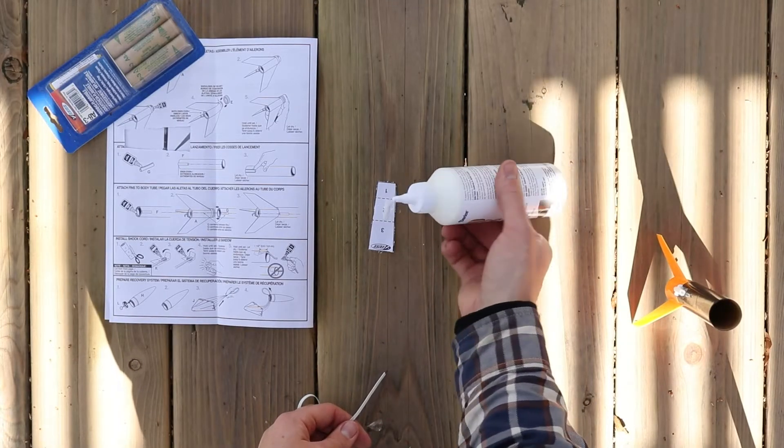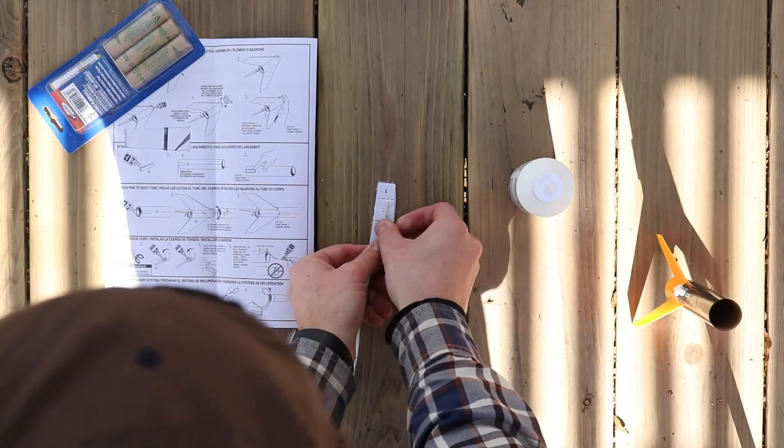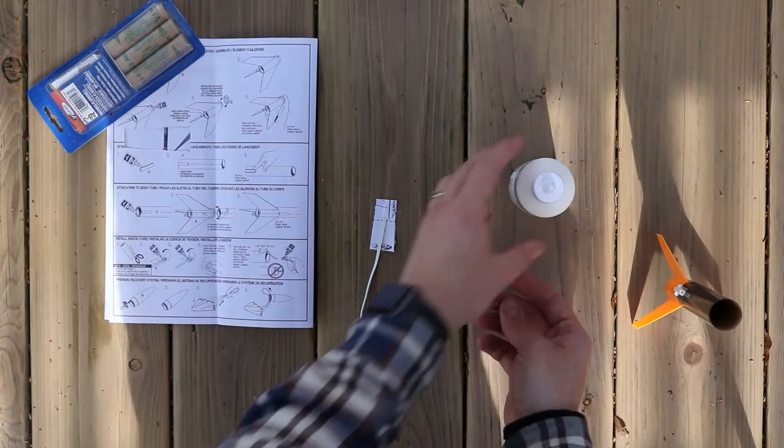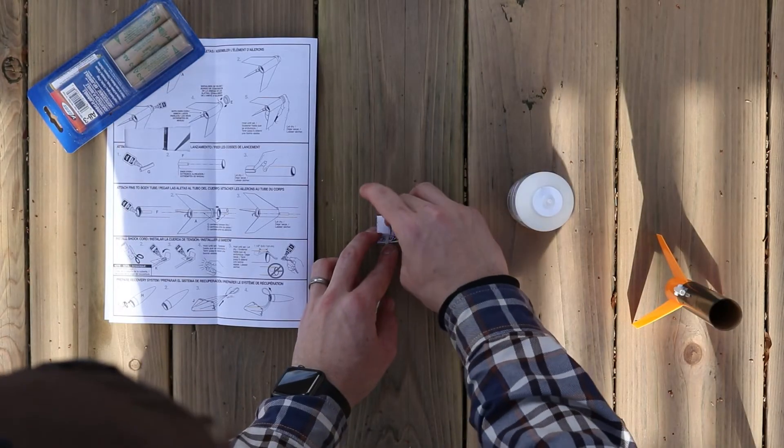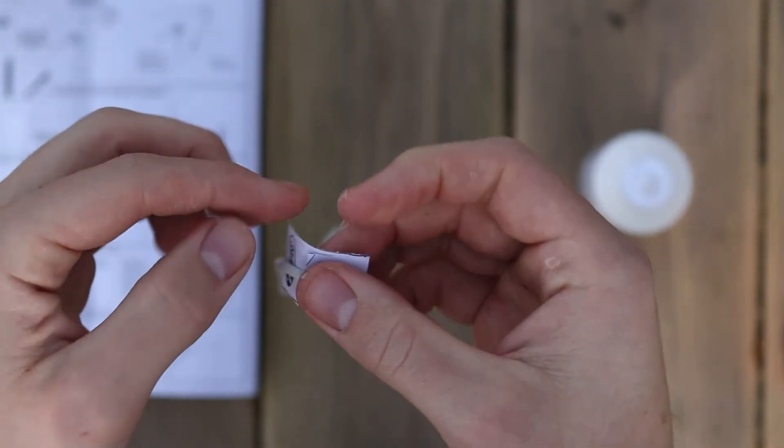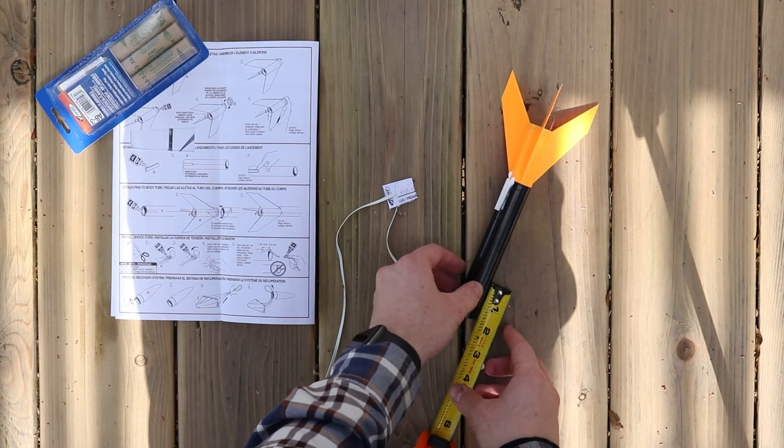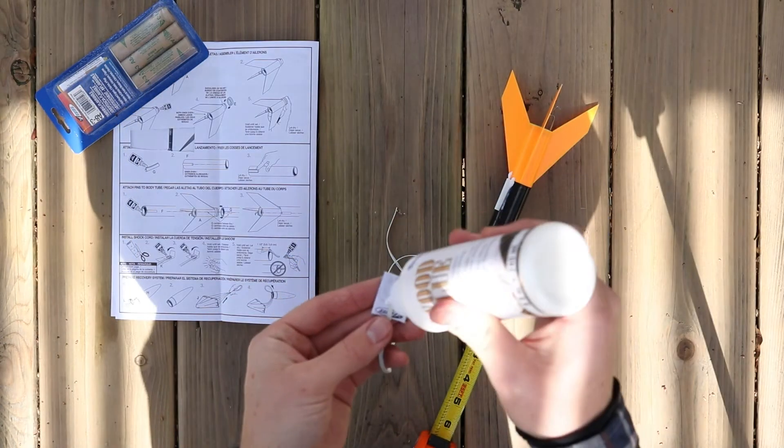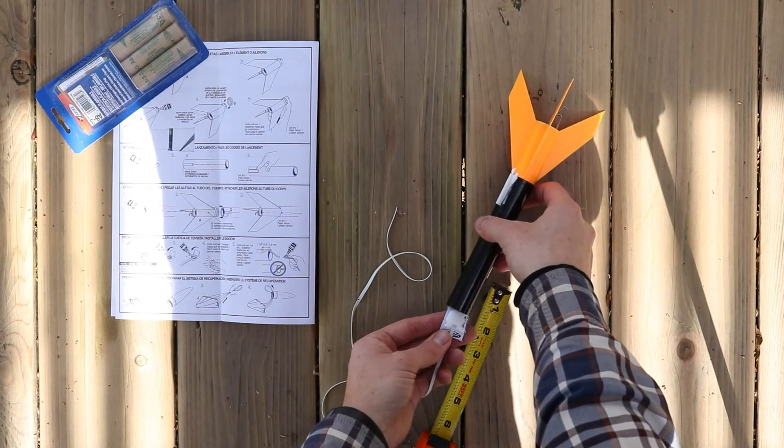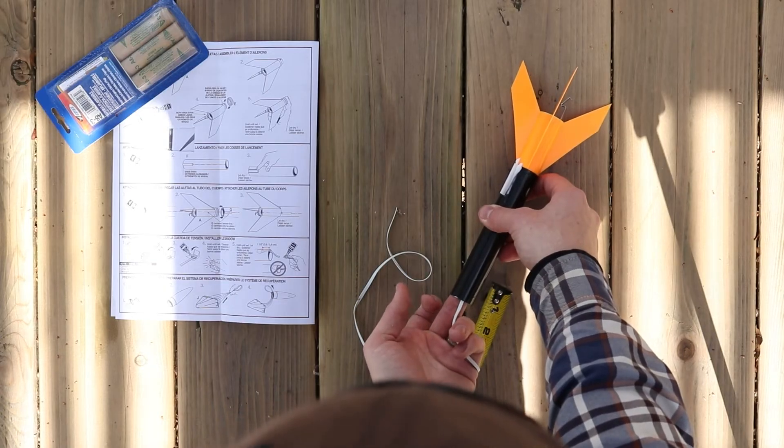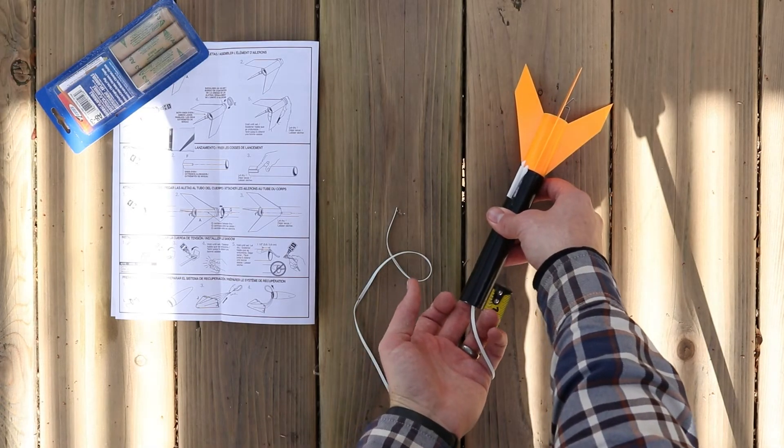Next, we're installing the shock cord. Flip to the front of the instruction manual, and you'll see the paper shock cord mount. You'll need to cut this out. Lay it down on the table, then put some glue over area two. Lay the shock cord down, then fold area two over area one. Next, put glue on area three. Fold it down again over area three, and hold until glue dries. It should look like this. It's not beautiful, but this will work great. Once dry, measure one and a half inches down from the top of the body tube. Apply glue to the shock cord mount and slide it in so the top of the shock cord mount is one and a half inches down from the top of the body tube. This will leave room at the top of the body tube for the nose cone to fit. You don't want this piece to come out, so again, hold until dry.